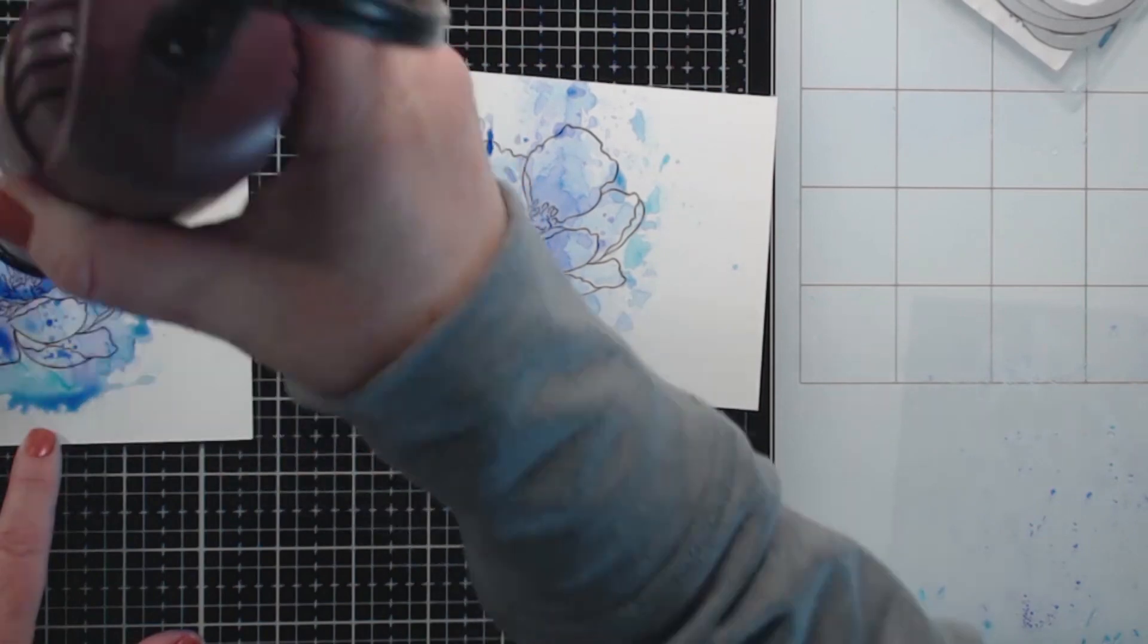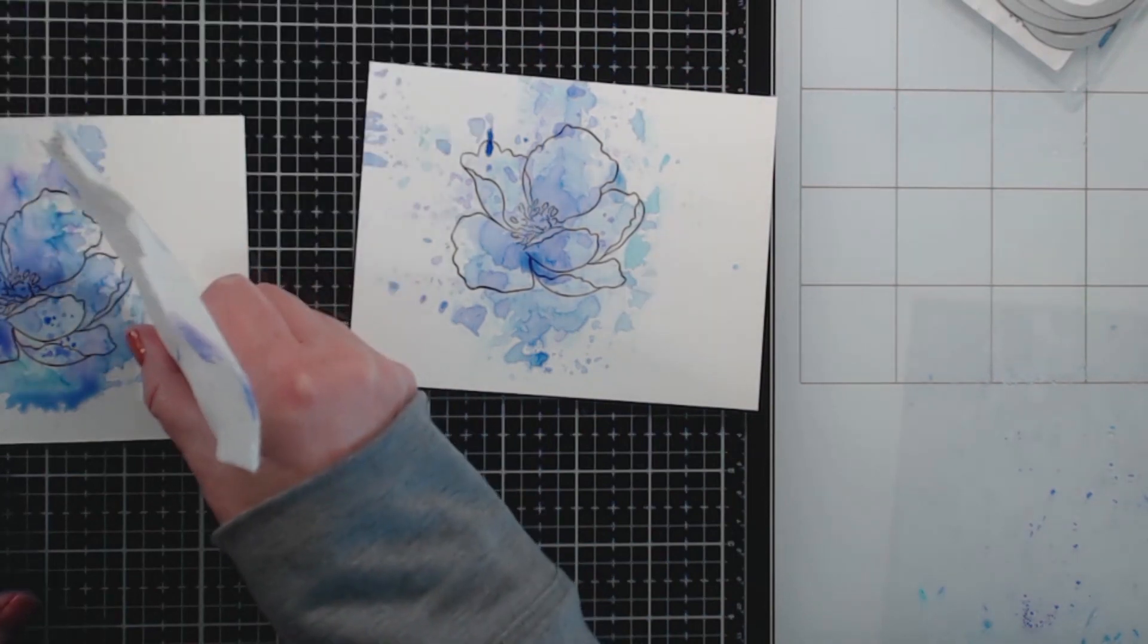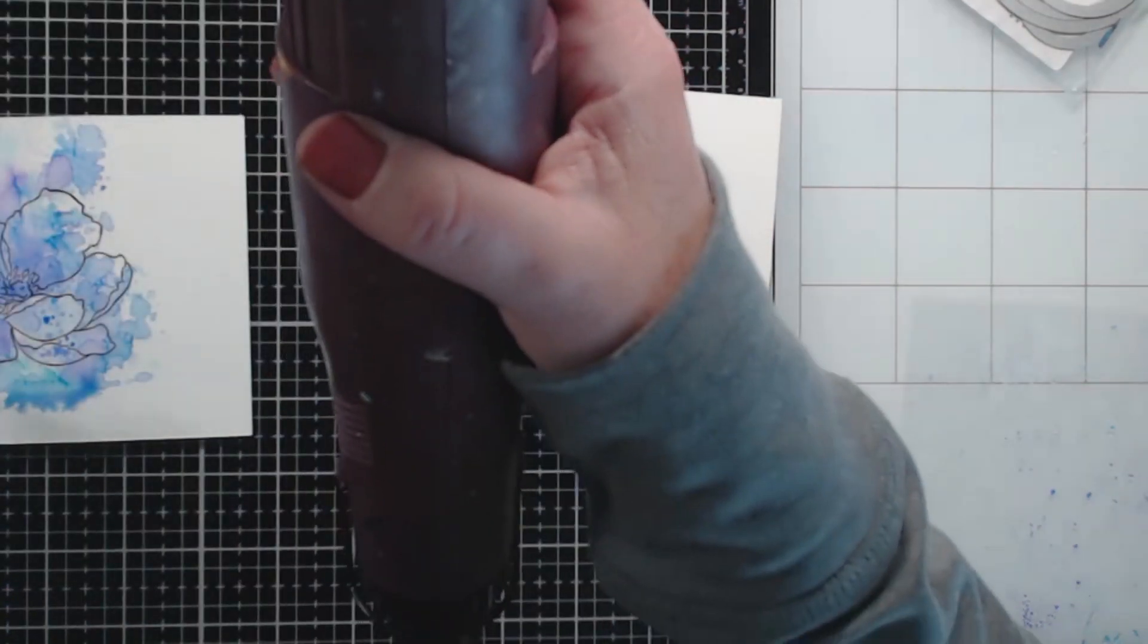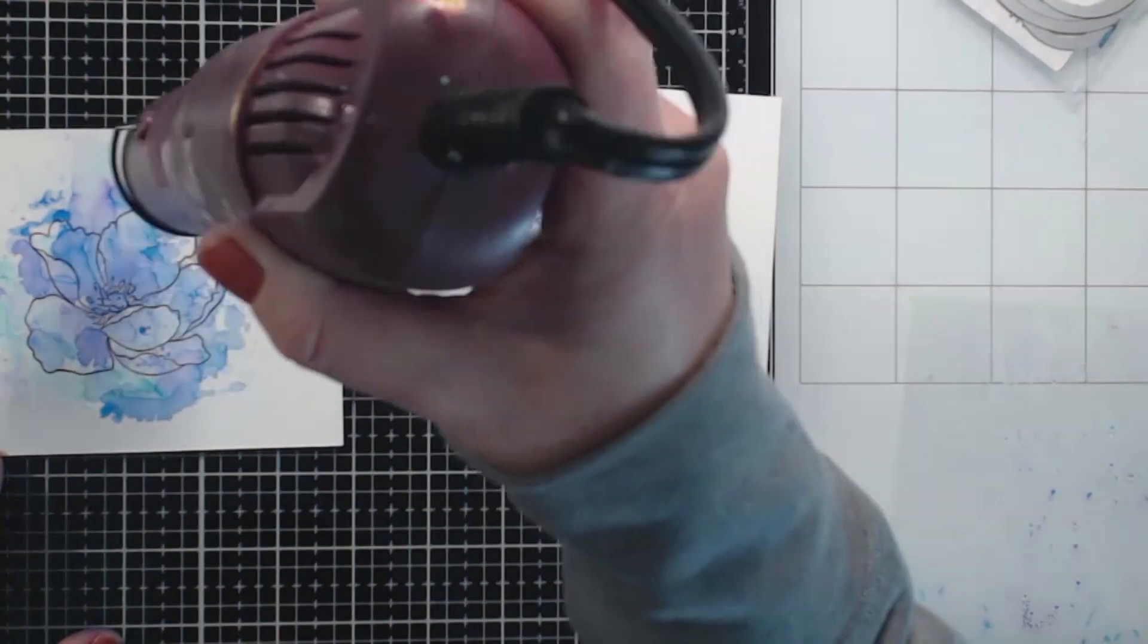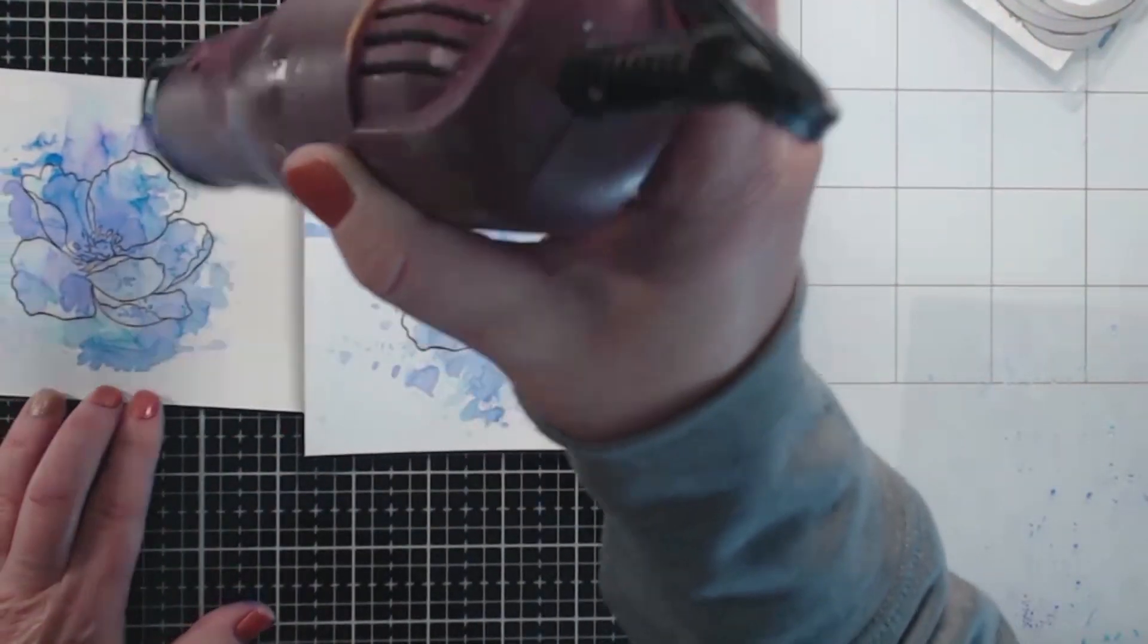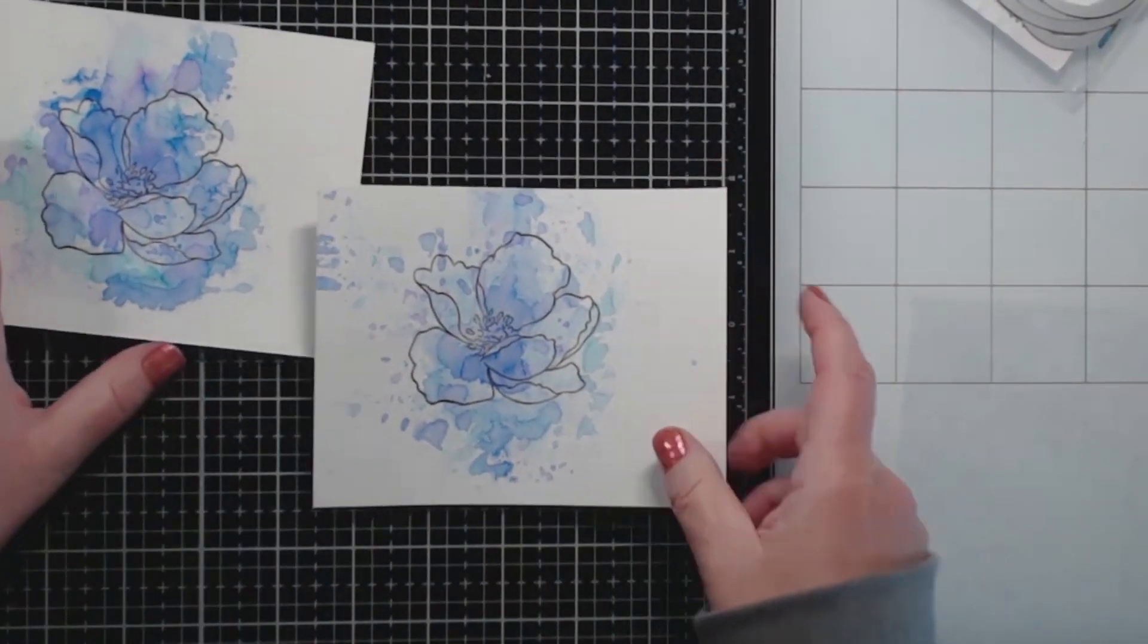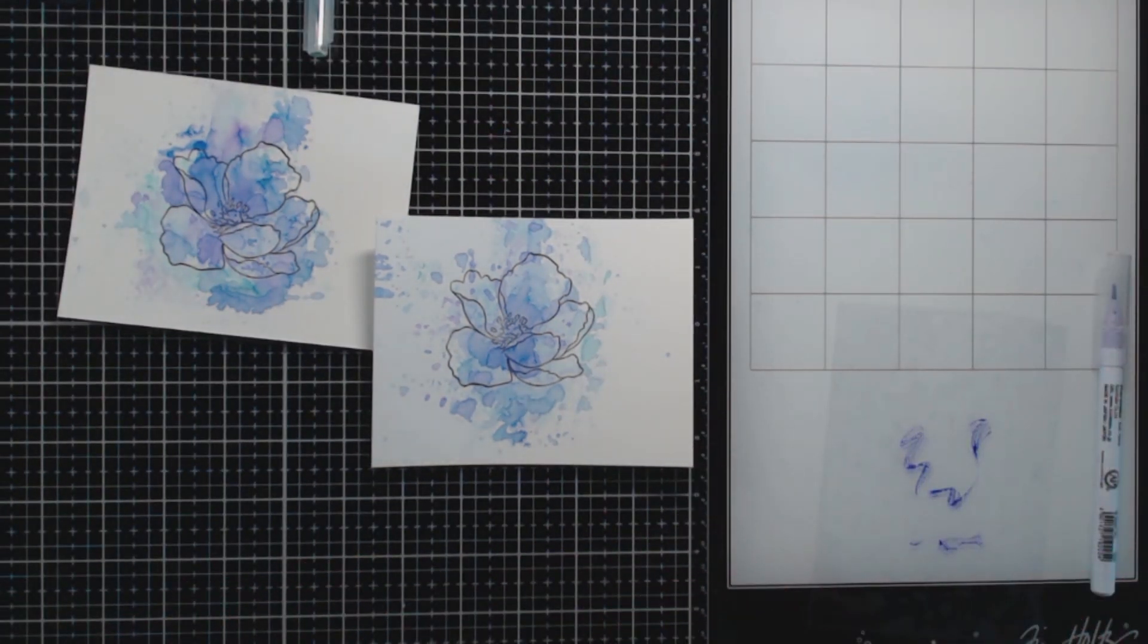Now I'm using Zig Clean Color Real Brush Markers but really you can use any water-based markers, dye inks, watercolors, or spray inks. Lots of different items that you might have in your stash would work with this process. I like using these watercolor markers because it gives you another way to use something you already have in your stash. Using what we have in different ways can give us more bang for our buck and also be more fun.